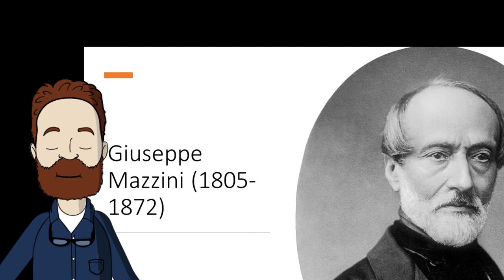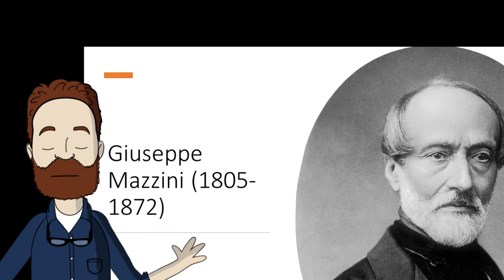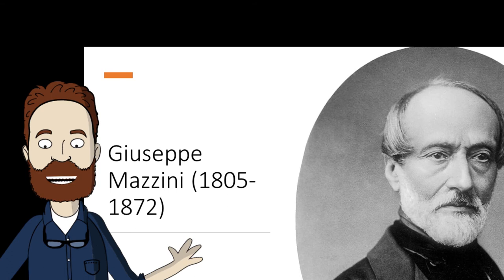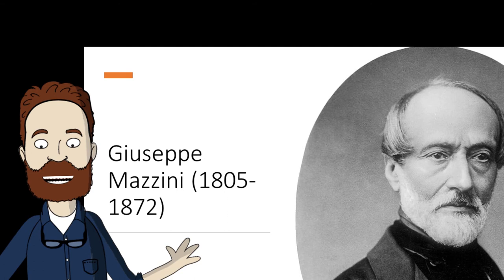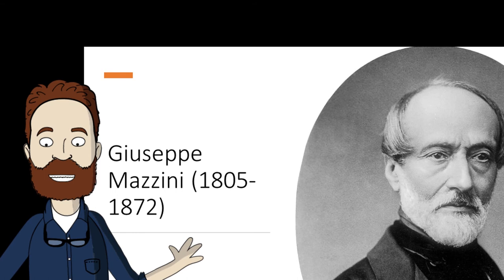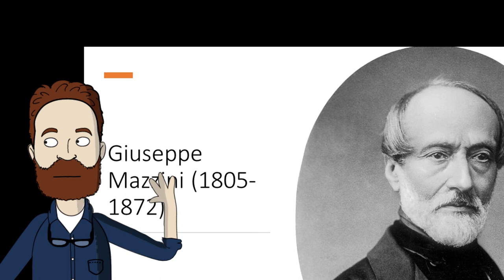Mazzini became the leading prophet of the Risorgimento — the movement for Italian unification that wanted to restore the nation to the glory days of the Roman Empire and the Renaissance. He would send propaganda and literature into Italian ports hidden in cargoes of stones and grain. His intense dedication and visionary ideas were to be fulfilled by another generation of Italian patriots.